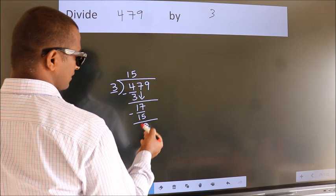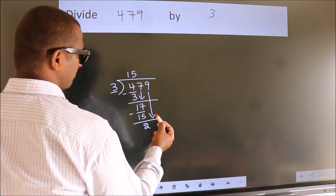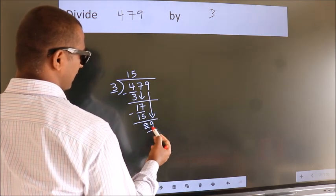After this, bring down the beside number. So 9 down. So 29.